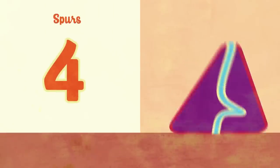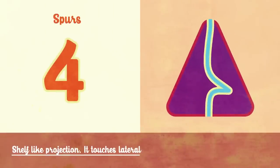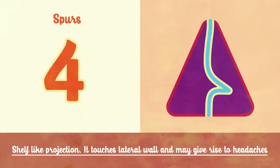The fourth type is spurs: a shelf-like projection that touches the lateral wall and may give rise to headaches.